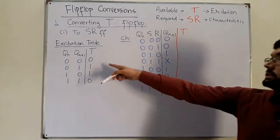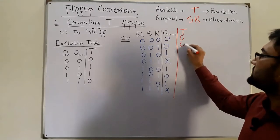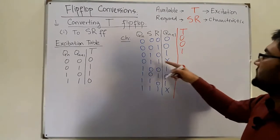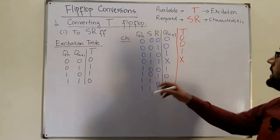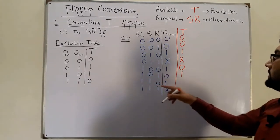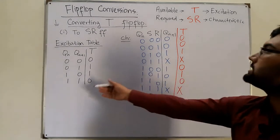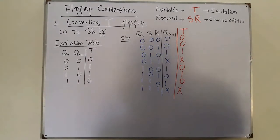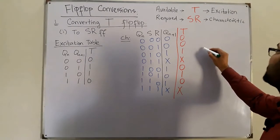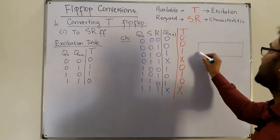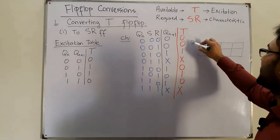When the present state and next state are 0→0, T is 0. For 0→1, T is 1. For the don't care condition, we place a don't care. For 1→1, T is 0; for 1→0, T is 1; and the don't care condition again gives a don't care. Now you find the boolean expression for T in terms of S and R using a K-map.